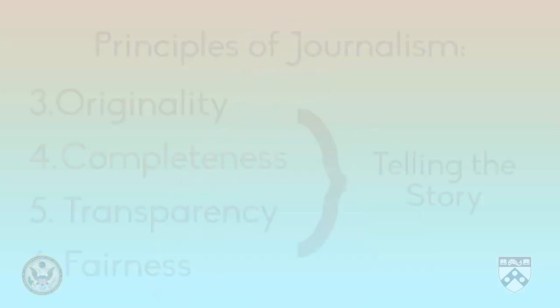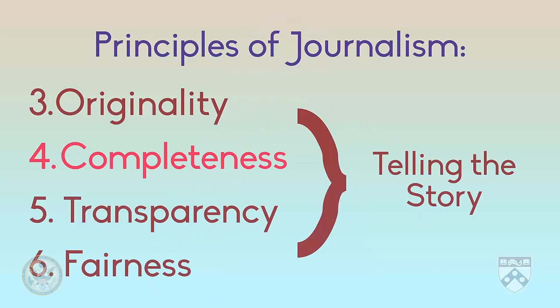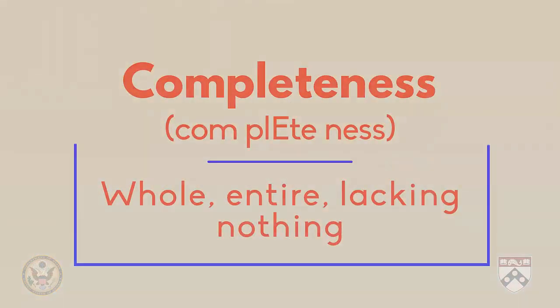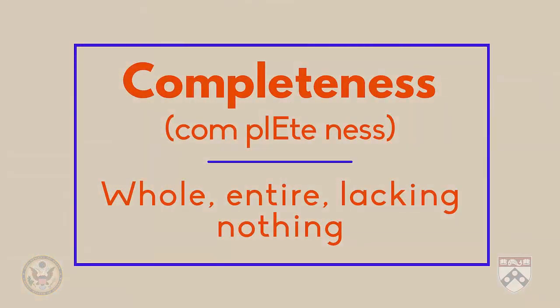Plagiarism is something that a journalist should never do, and it can cause many problems. Another important principle to remember is completeness. This means that journalists need to tell the whole story, not just a part of it.